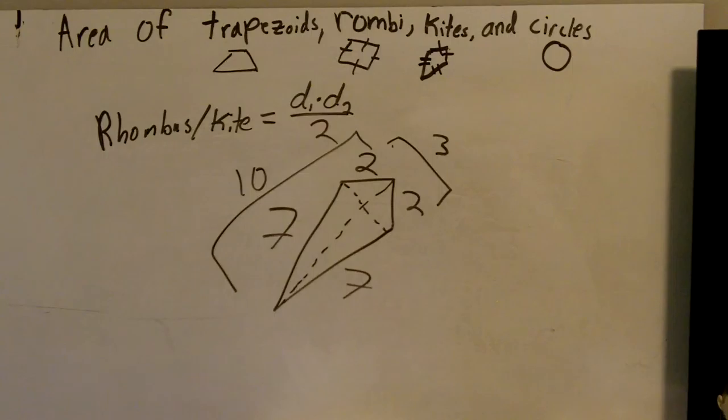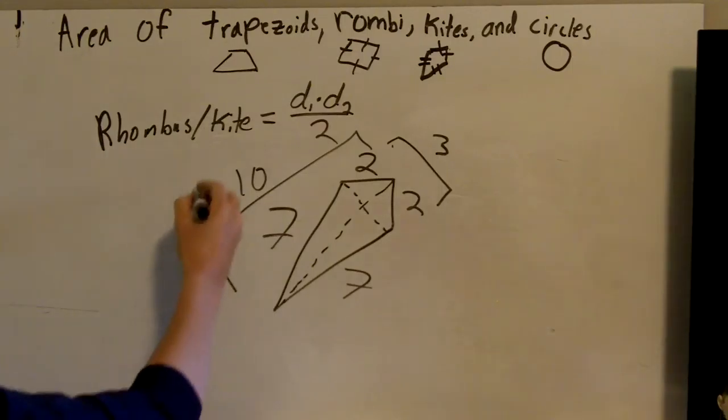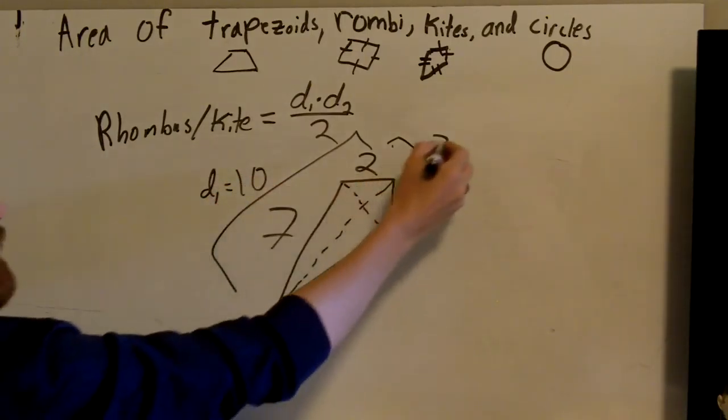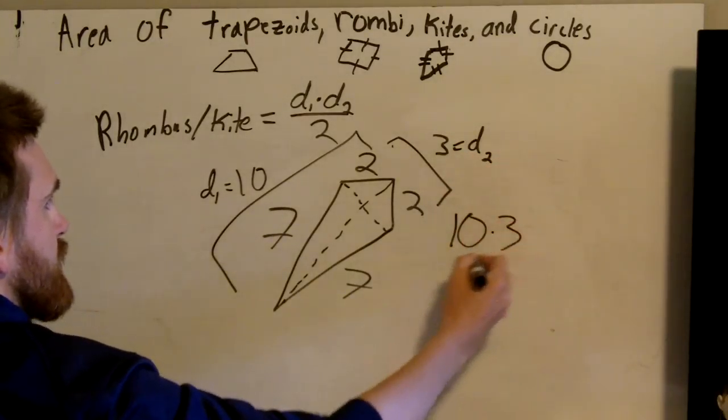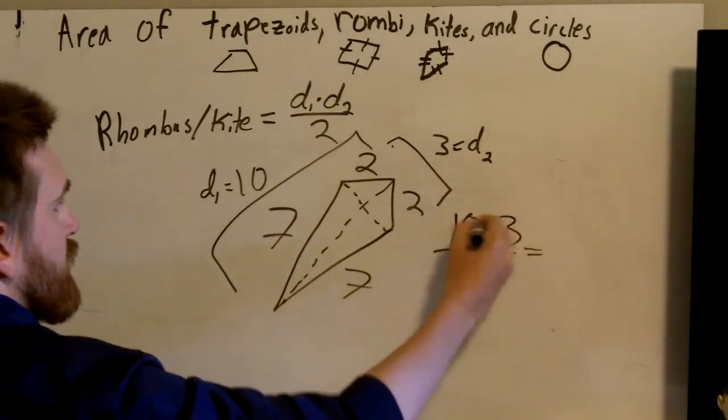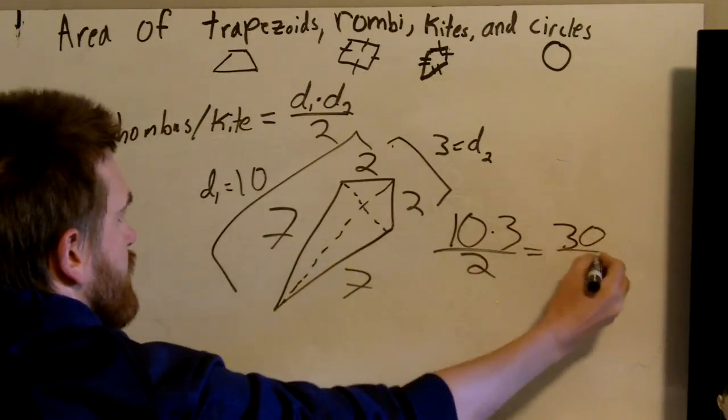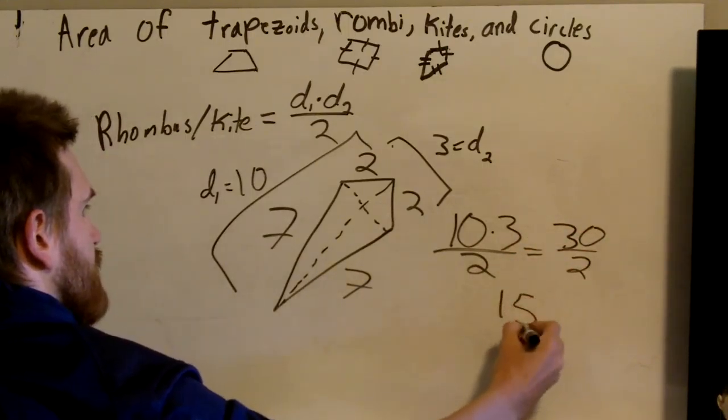So what we need to do is figure out where our diagonals are. Diagonal one is 10. Diagonal two is 3. So 10 times 3 divided by 2. 10 times 3 is 30. Divided by 2 gives us an answer of 15.